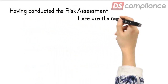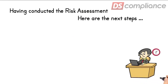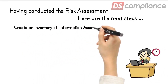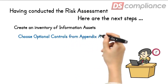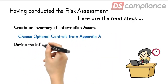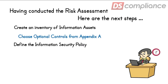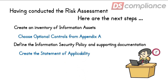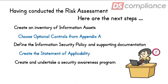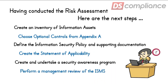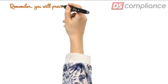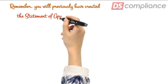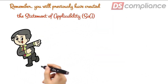Having conducted the risk assessment, here are the next steps. Create an inventory of information assets. Choose applicable optional controls from Appendix A. Define the information security policy and supporting documentation. Create the statement of applicability. Create and undertake a security awareness program. And perform a management review of the ISMS. Just a reminder that the statement of applicability is a document that shows how you have responded to the requirements of Clause 4-10, as well as the optional controls you have selected in Appendix A.